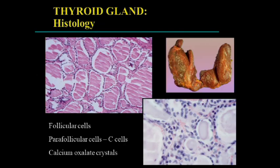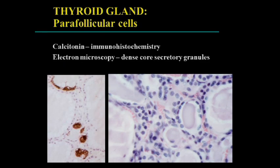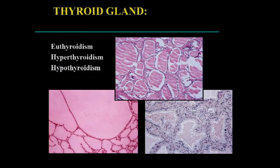The thyroid gland has follicular cells that give rise to thyroid hormones. The parafollicular or C cells — the calcitonin-producing cells — are present in between. Under normal circumstances on H&E, they're not that obvious. To confirm you're in thyroid tissue, you can look for calcium oxalate crystals, particularly on smears. The C cells may be highlighted by dense core secretory granules on EM, or by calcitonin staining.